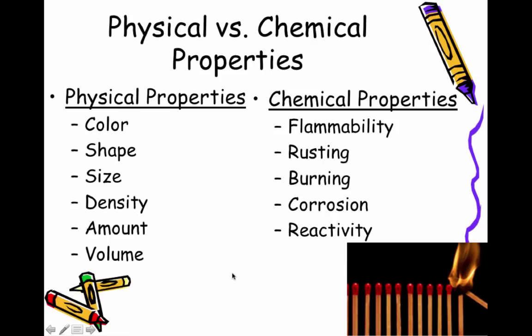So we talked briefly about physical and chemical changes. Now we can look at some different physical and chemical properties. Physical properties are things like color, shape, size, density, the amount of a substance, and volume. Chemical properties are flammability, rusting, burning, corrosion, and reactivity.